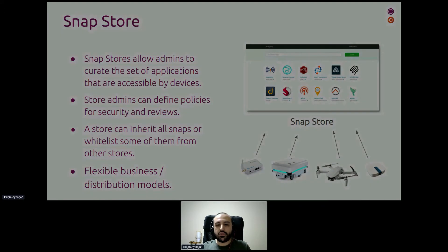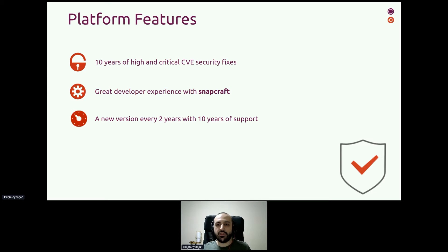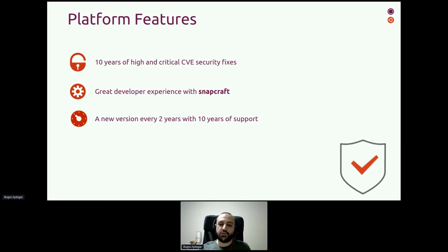I'd like to mention some platform features of Ubuntu Core. Ubuntu Core promises 10 years of CVE security fixes. Every two years there will be a new Ubuntu Core version — currently there is Ubuntu Core 20, but in April we will release Ubuntu Core 22. We also provide a tool called Snapcraft that allows you to build your snaps.